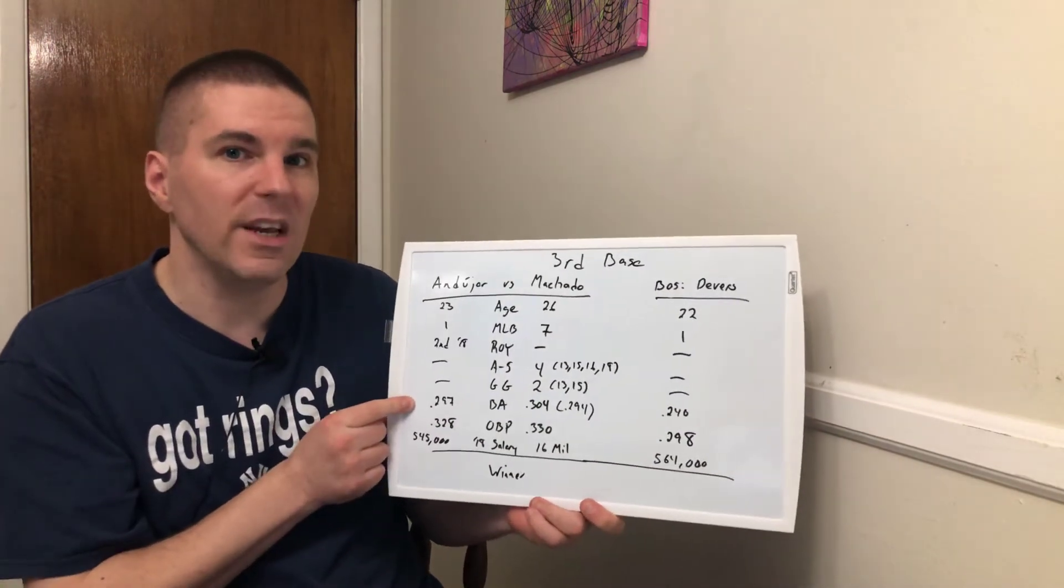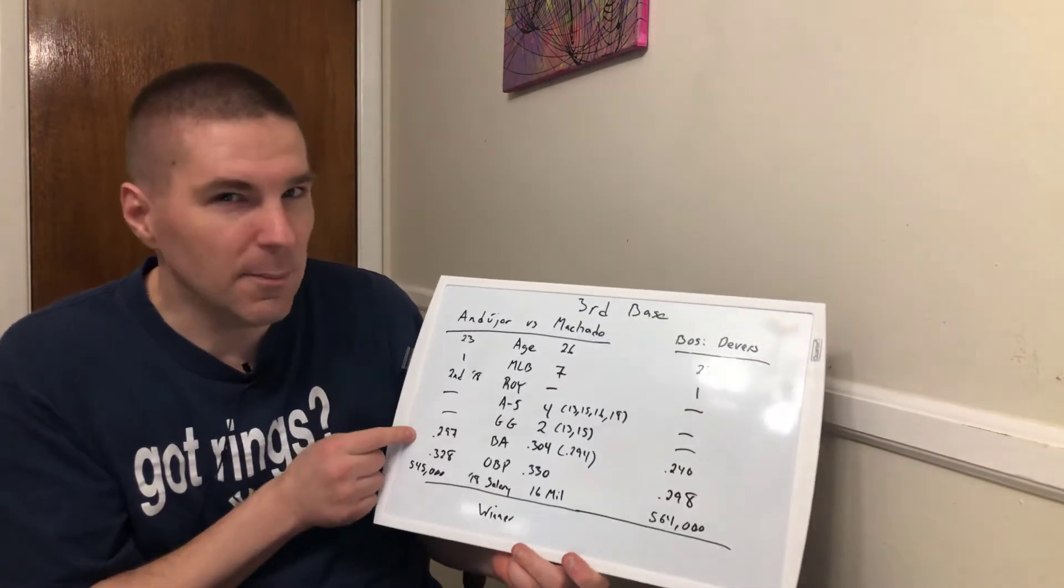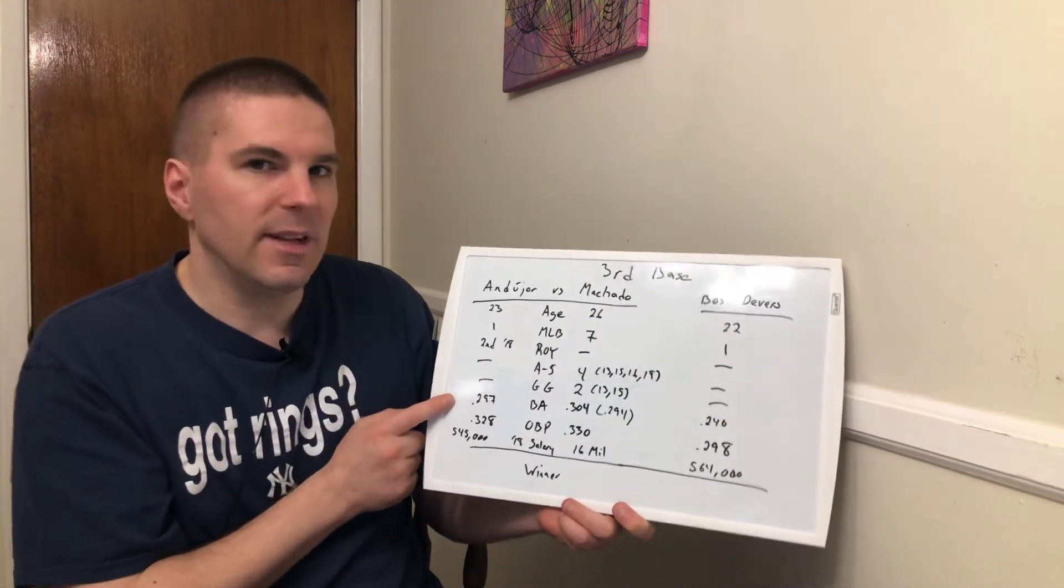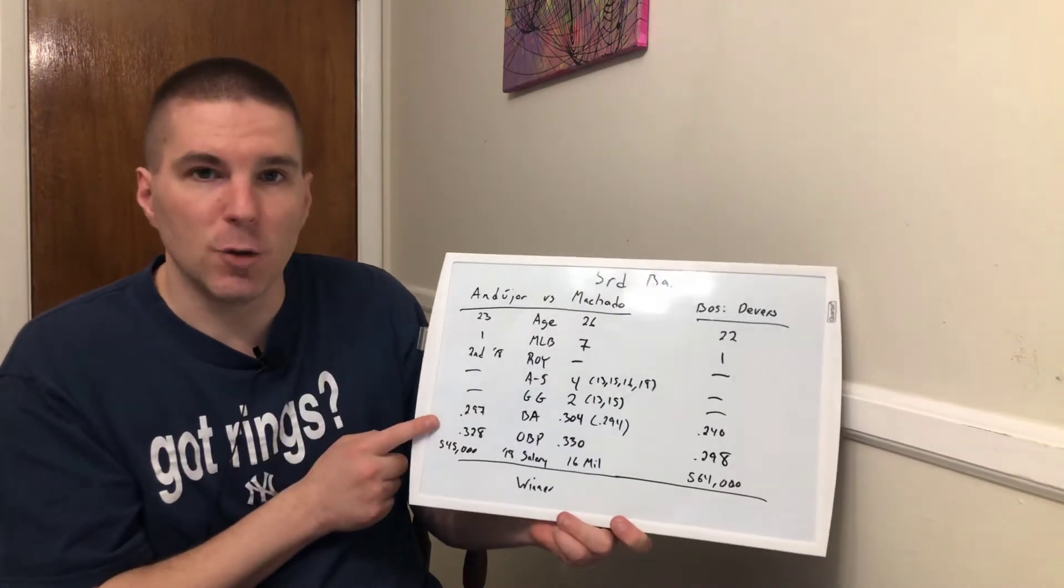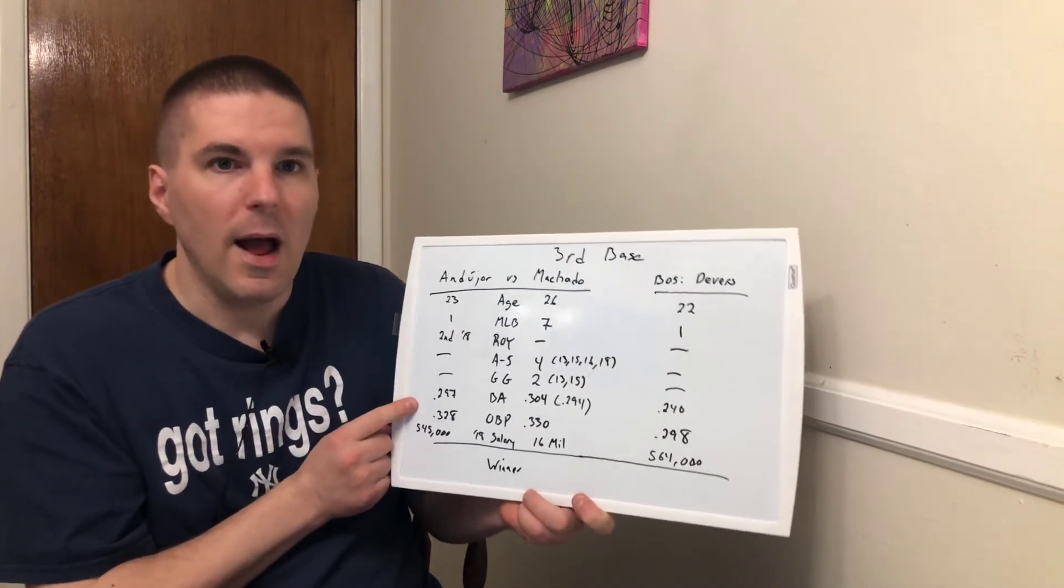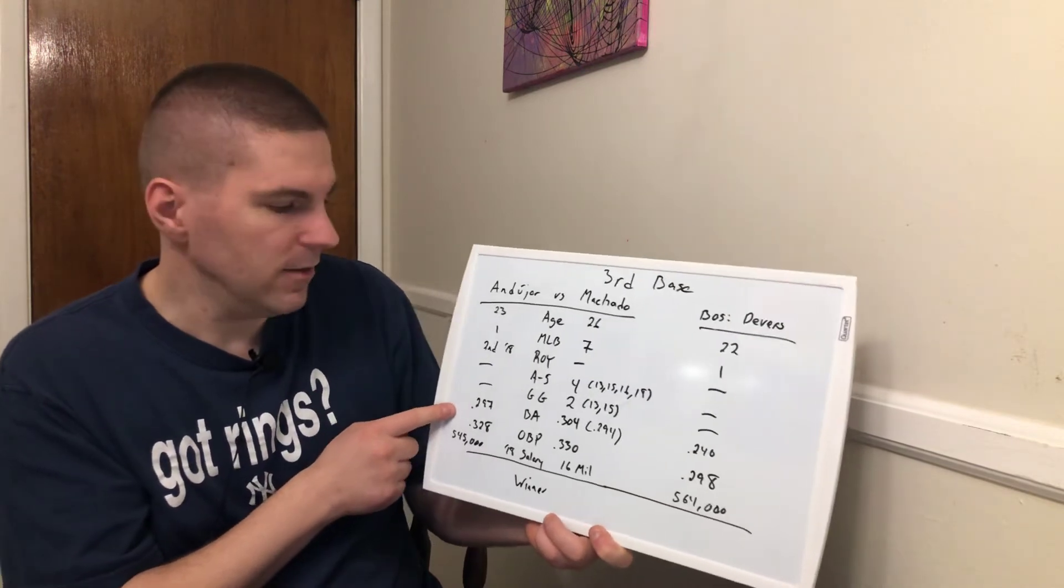Where did the others rank? Devers is down at .240. Andujar at .297. He had a better rookie year for batting average than Machado did. Do I see potential for upside? Absolutely. No question. However, that comes down to, you can't predict the future potential. Can the team develop a player, help him become, realize his full potential and achieve those marks?